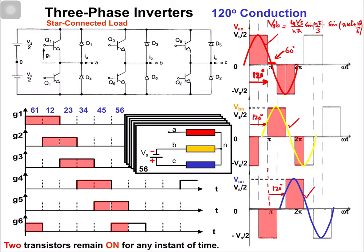That expression is for the waveform with peak value Vs. Since for this 120 degree conduction waveform the peak value is Vs/2, the Fourier coefficient becomes (2Vs / nπ) × sin(nωt). This gives the magnitude of each harmonic and its phase. The Fourier series representation can be obtained as previously discussed for the quasi-square waveform.